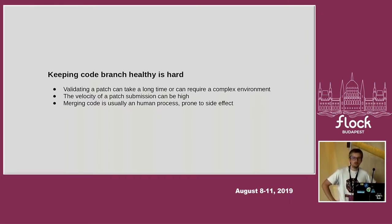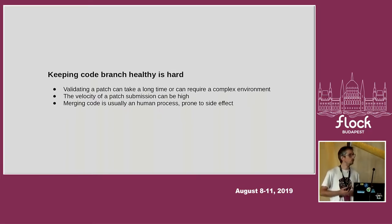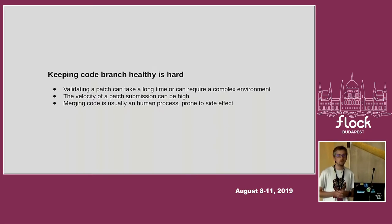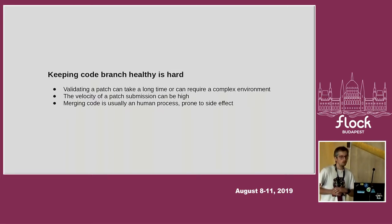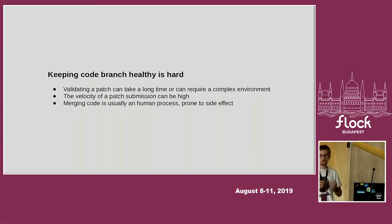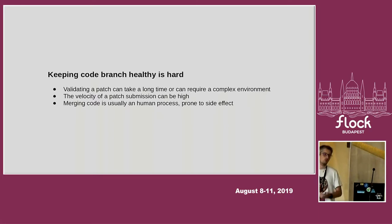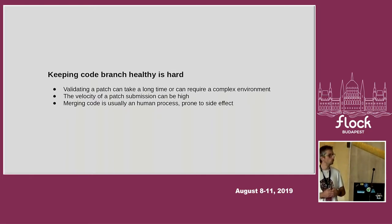Let's talk a bit about gating. The tagline of Zuul is 'stop merging broken code.' The fact is, keeping a code branch stable is hard for many reasons. By stable I mean that the last version of the code continues to pass the test suite of the repository or project. Indeed, validating a patch can require complex integration tasks, artifact building, or even multiple nodes to run. And the problem is even worse when there are multiple patches or multiple pull requests to go through. Merging is a human process, and problems like miscommunication can lead to a broken master situation where the branch no longer passes the tests.